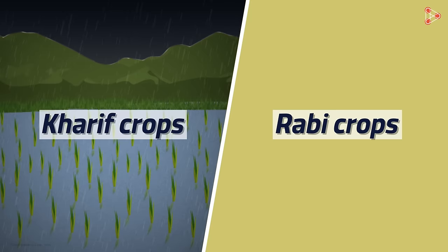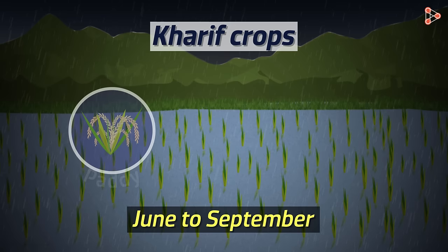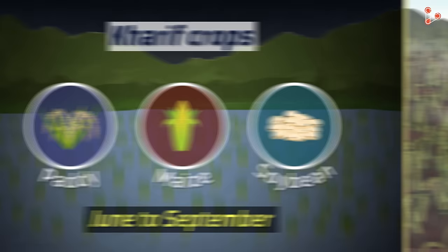What is the difference between the two? The former are sown in the rainy season while the latter are sown in the winter season. Rainy season in India spans from June to September. Crops grown in this period are paddy, maize, soybean which require moisture and a large quantity of water.